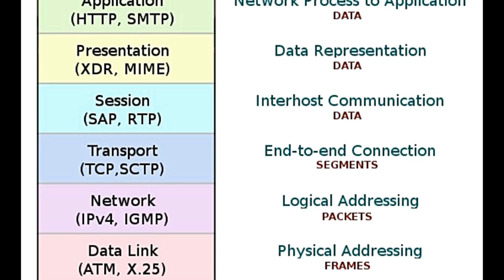Network layer: Its main function is to provide switching technologies, routing technologies, and transmitting data from one node to another. It creates logical paths for the data transmission, which are known as virtual circuits. It is also responsible for handling errors, packet sequencing, controlling network congestion, and addressing. Thus, it is responsible for setting up the required network for transferring data from one user to another.